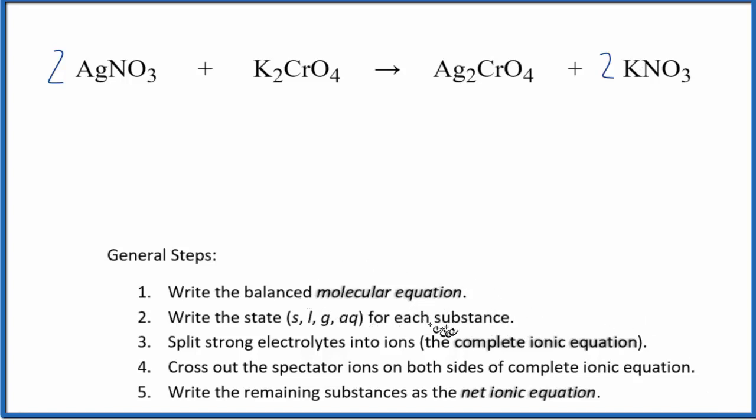After we've balanced our molecular equation we need to write the states. So the reactants, they're going to be aqueous here in this case. And the products, if we look those up, we know that potassium nitrate, nitrates are very soluble, that's going to be aqueous. But if we were to look this up on a solubility table, this silver chromate, it would actually be a precipitate. It would be a solid. So it would have fallen to the bottom of the test tube when we react these two substances.